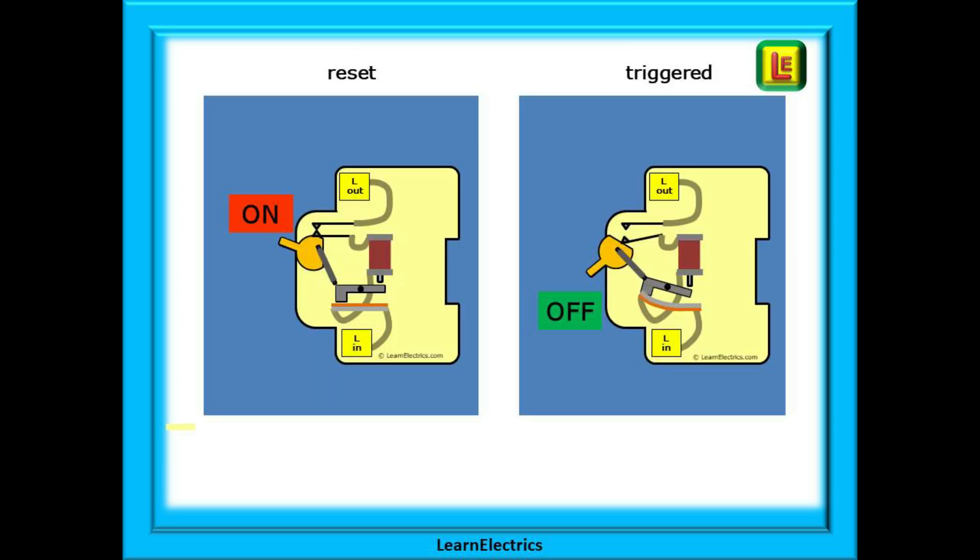On the left is the MCB in its normal on position with current flowing through it. On the right is a tripped MCB, the contacts are open and no current is flowing.